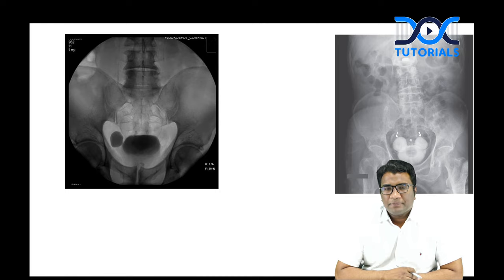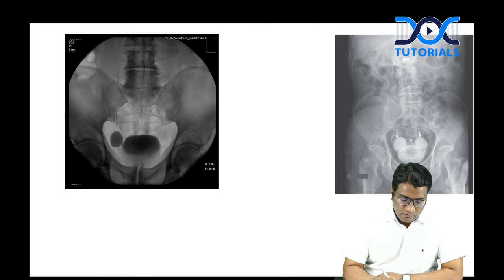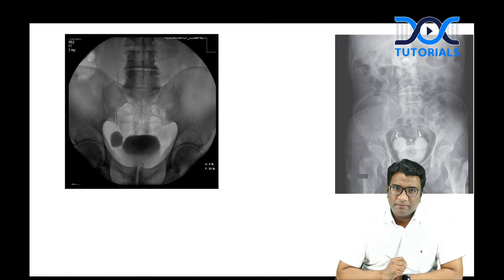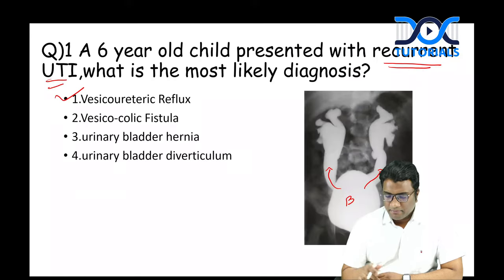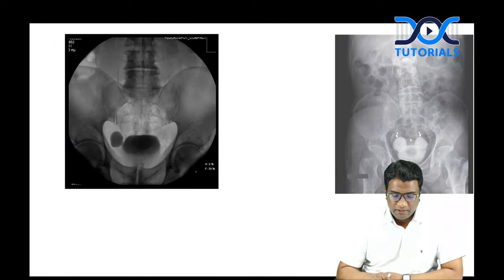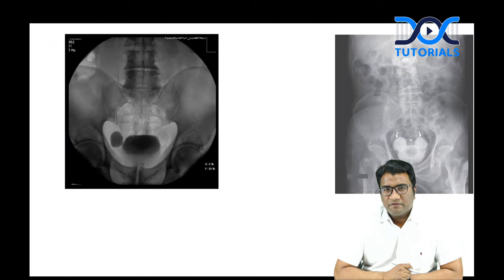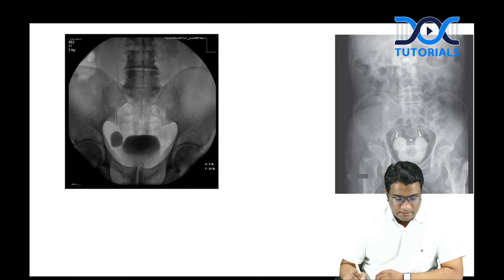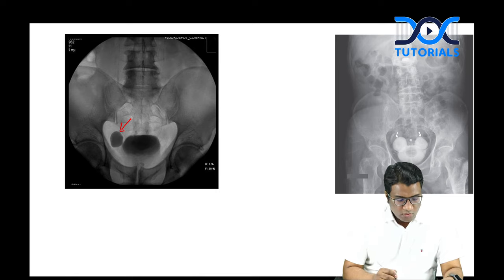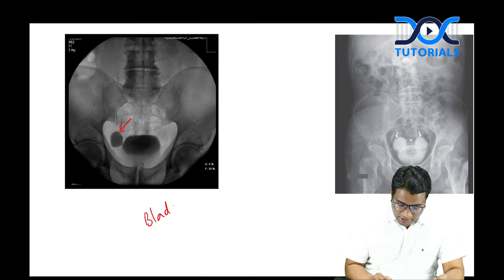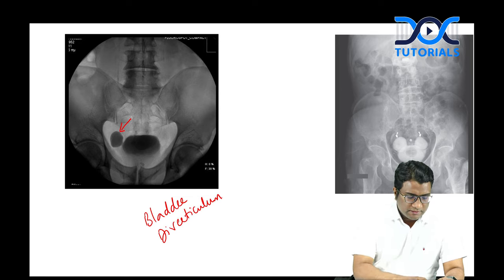On MCU micturating cystourethrography showing bilateral reflux, that's easy to identify. But what if you see a contrast-opacified bladder with small outpouchings adjacent to it? That is how you have bladder diverticulum — very different from vesico-ureteric reflux.